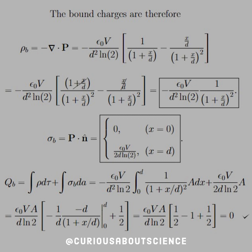We notice that the factor of x over d cancels in each fraction, leaving us with the expression in the box, where the volume-bound charge is now equal to epsilon naught V over d squared ln of 2, negative, times 1 over 1 plus x over d squared.